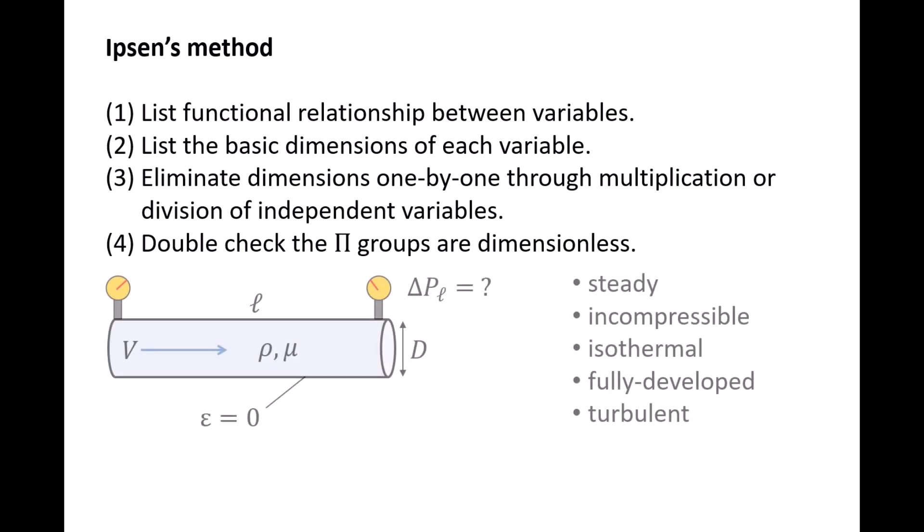To demonstrate how Ibsen's method works, we will revisit a system discussed in previous videos where a smooth-walled pipe experiences steady, incompressible, isothermal, fully developed turbulent flow. Recall that the pressure drop per length of pipe, delta PL, is some function of the flow speed V, pipe diameter d, fluid density rho, and the fluid's absolute viscosity mu. Writing out this functional relationship is step 1.